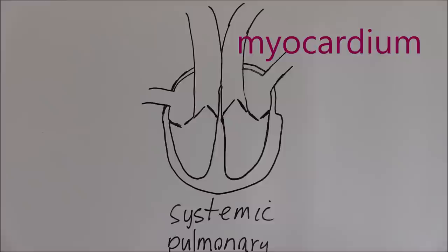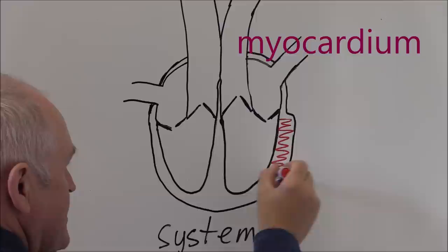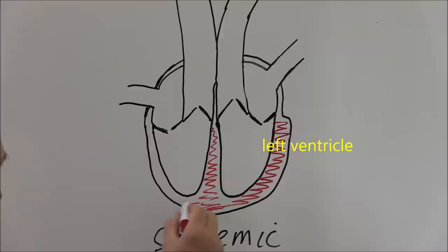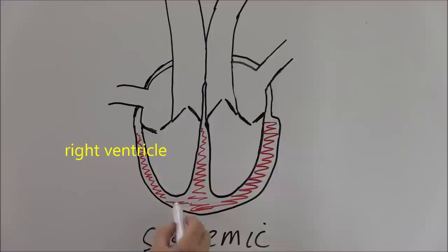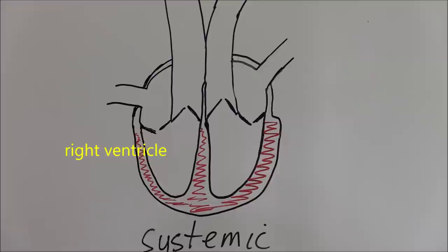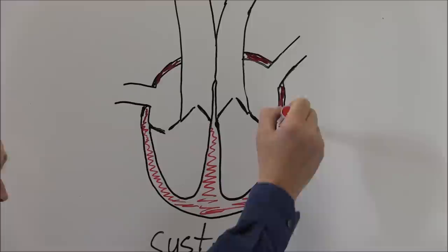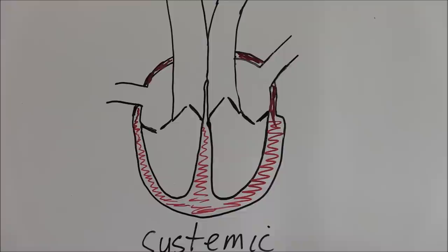The left ventricle has a thicker myocardial wall because it has to pump blood to all of the systemic circulation, and the muscle in the septum is also heavily involved in generating this contractile force. The right ventricle has a relatively thinner muscular wall because it only has to pump blood via the pulmonary artery to the lungs, and that's not so far. The atria also have a myocardial wall, but again it's thinner because they're just pumping blood from the atria down into the ventricles.